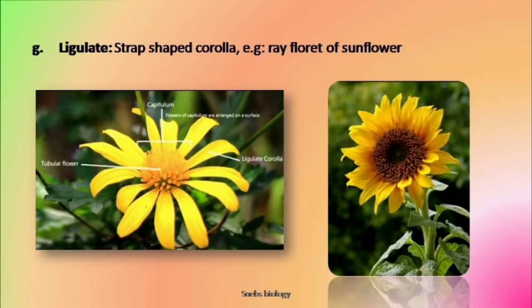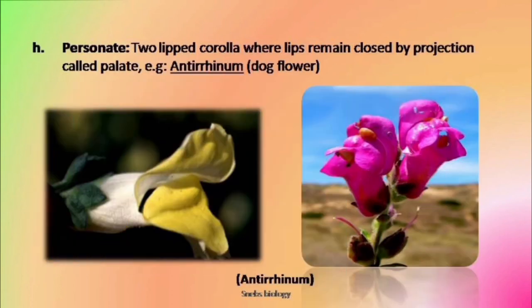The next type of corolla is known as ligulate corolla — a tongue-like corolla where all the petals are fused to form a strap-like or tongue-like structure. This is seen in the ray floret of sunflower. That yellow structure visible towards the periphery of sunflower is actually the ligulate corolla. Another one is personate corolla — here the corolla is also bilipped, but its mouth is closed due to tightly placed lips of the corolla, which is seen in Antirrhinum, that is the dog flower.